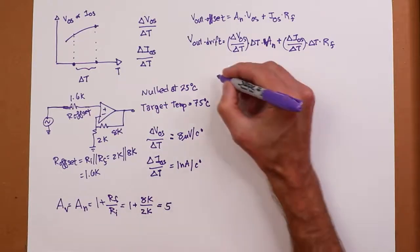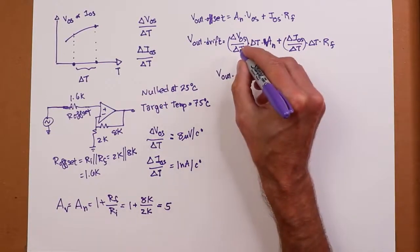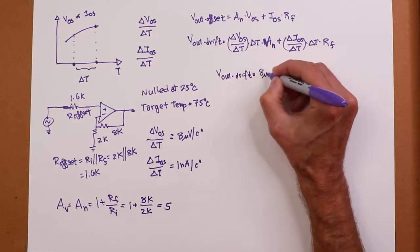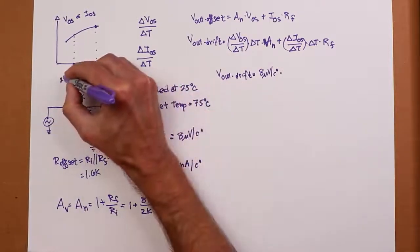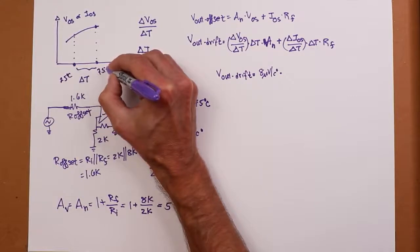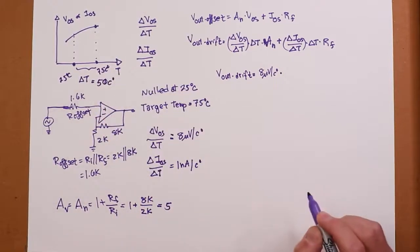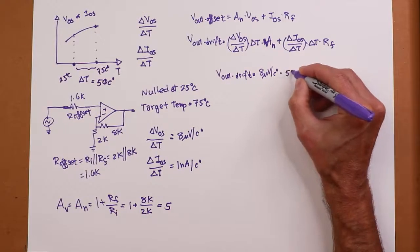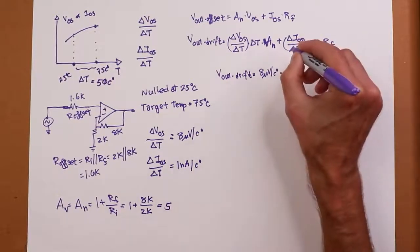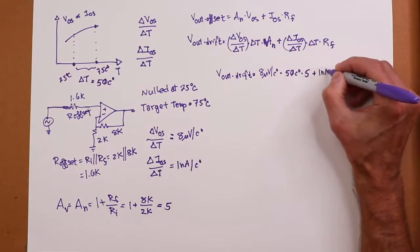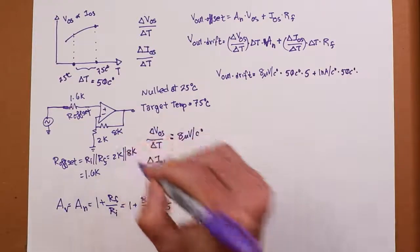So our output drift, our delta V_OS delta T is 8 microvolts per centigrade degree times delta T. Now our delta T, we're going from 25 to 75, so delta T is just that difference for 50 centigrade degrees. So multiply that 50 centigrade degrees and multiply by the gain of 5. And we add in the delta I_OS delta T, 1 nanoamp per centigrade degree times the 50 centigrade degrees times the RF value, which is 8K.